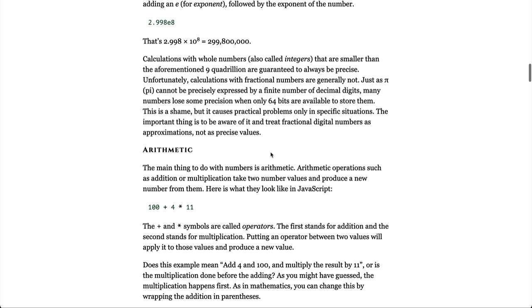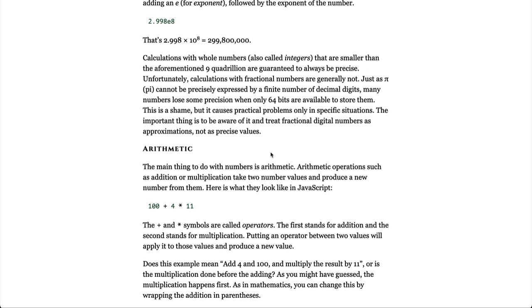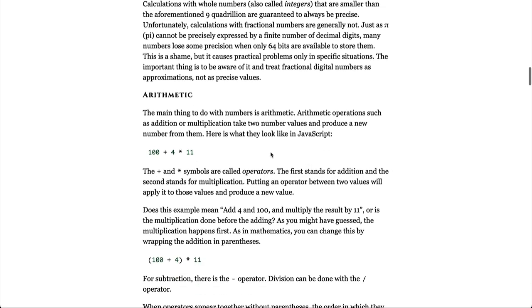Calculations with whole numbers, also called integers, that are smaller than the aforementioned 9 quadrillion are guaranteed to always be precise. Unfortunately, calculations with fractional numbers are generally not. Just as pi cannot be precisely expressed by a finite number of decimal digits, many numbers lose some precision when only 64 bits are available to store them. This is a shame, but it causes a practical problem only in specific situations. The important thing is to be aware of it and treat fractional digital numbers as approximations, not as precise values.